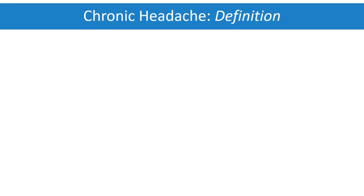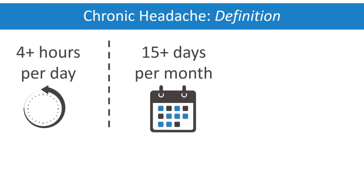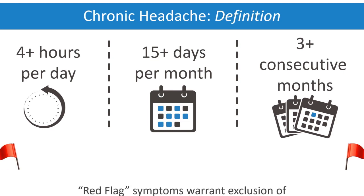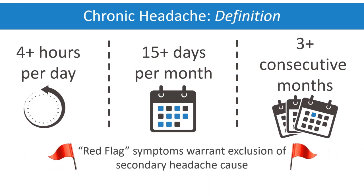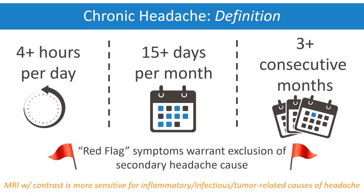A patient has a chronic headache, defined as four or more hours per day for at least 15 days per month over at least three consecutive months. Her neurologic exam is normal, but her increase in headache frequency is a red flag. So an MRI brain with contrast is obtained to exclude a secondary headache etiology.